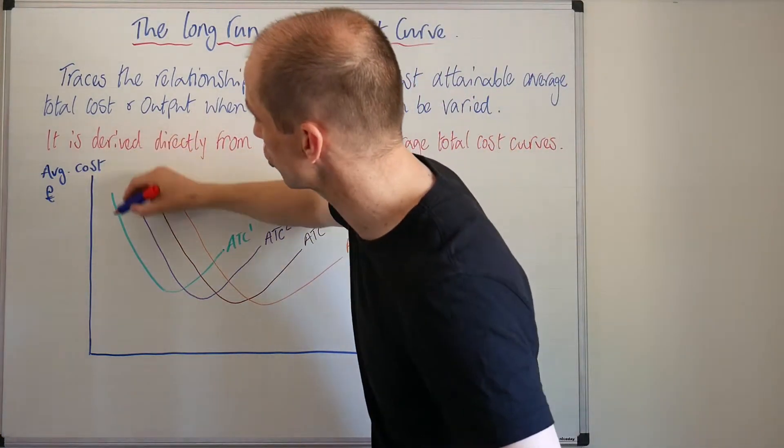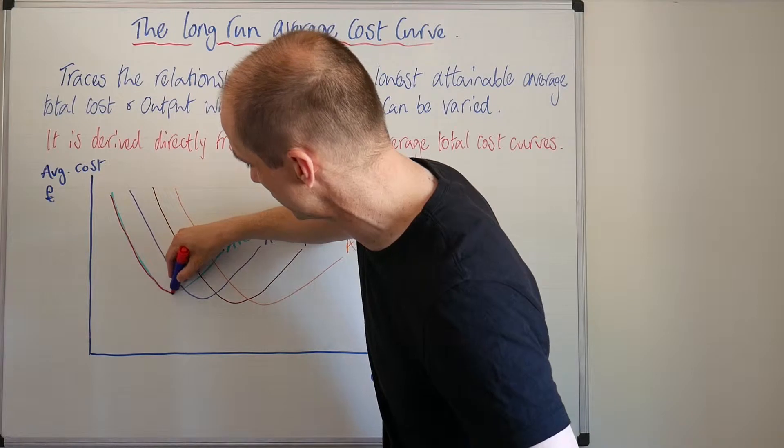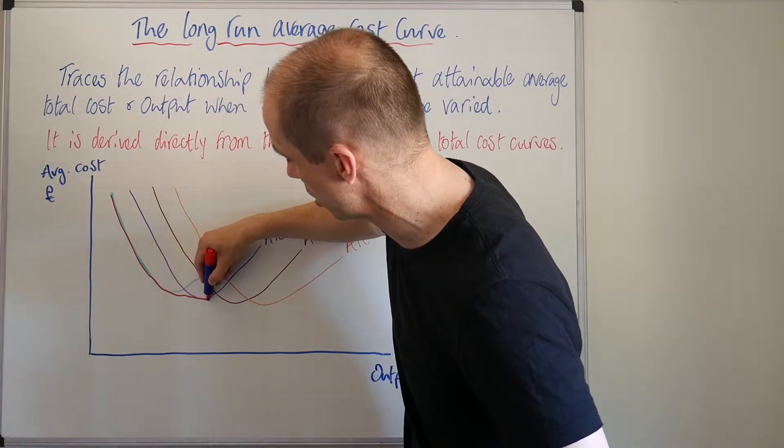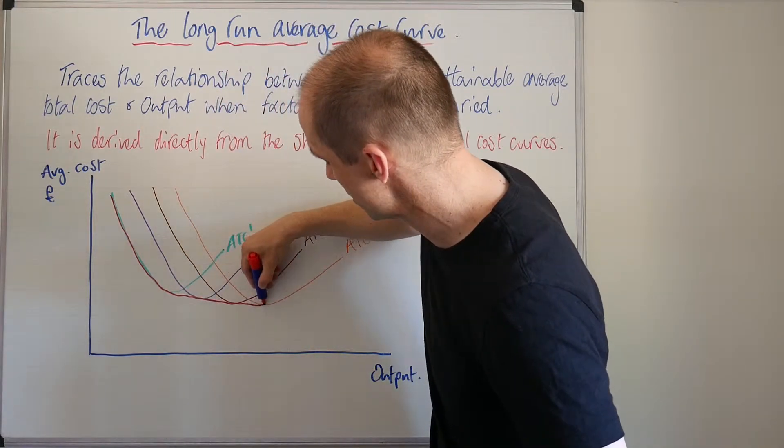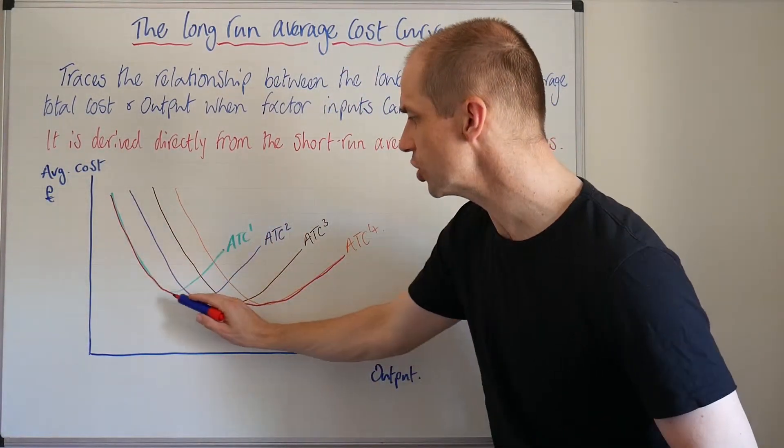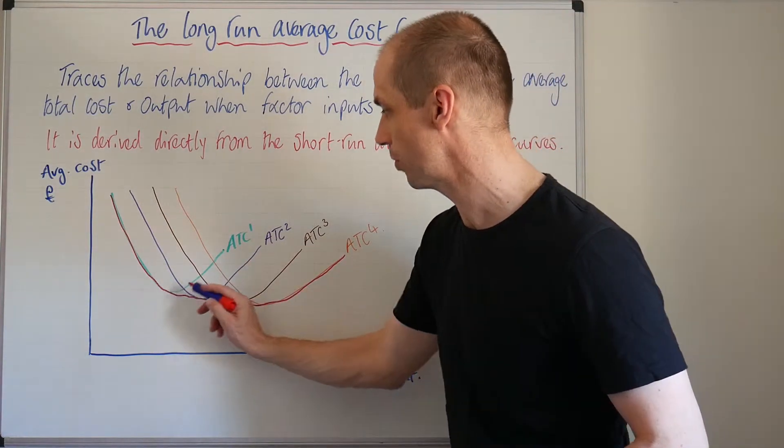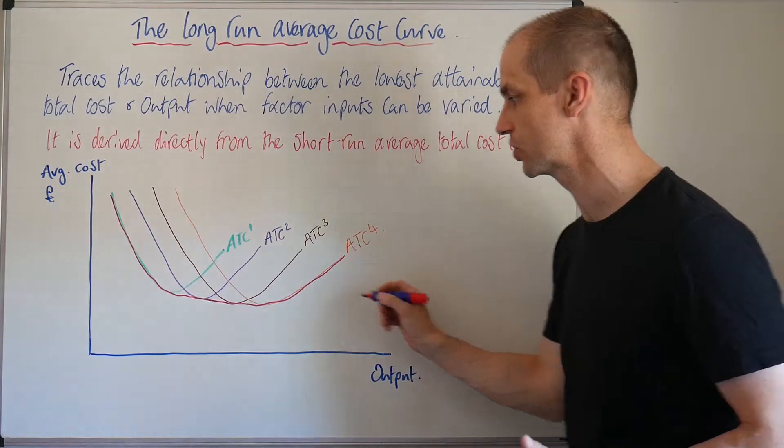If we trace these lines through, we can then illustrate our long run average cost curve. I've just smoothed this over to go over what otherwise would be a scallop shape on our long run average cost curve.